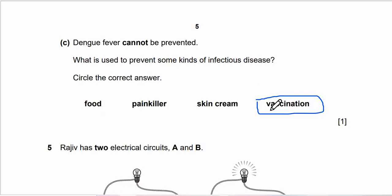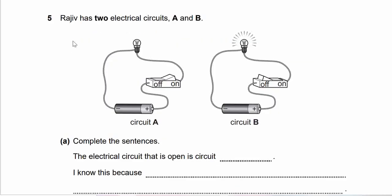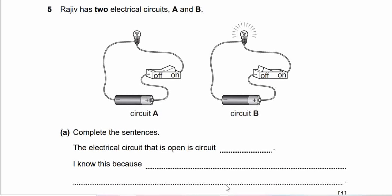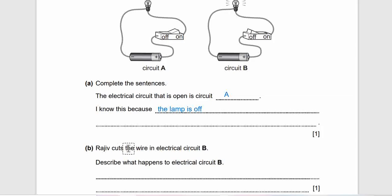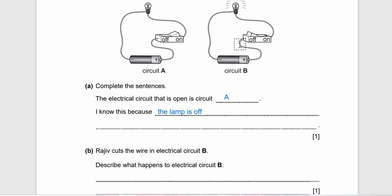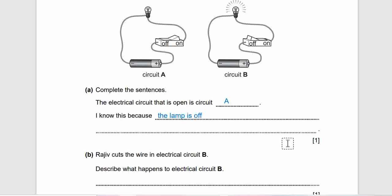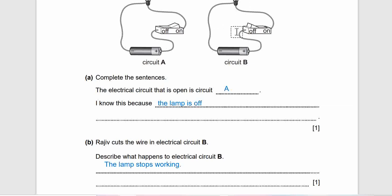Question 5: Rajiv has two electrical circuits A and B. Complete the sentences: The electrical circuit that is open is circuit - is it A or B? I know this because of what? I believe you know the answer guys. The answer is circuit A. How do we know? Because the lamp is off. This one, the lamp is on. Question 5b: Rajiv cuts the wire in electrical circuit B. What happens to the electrical circuit B? The answer is the lamp stops working, because when Rajiv cuts circuit B, the electricity cannot flow when the wire is cut.